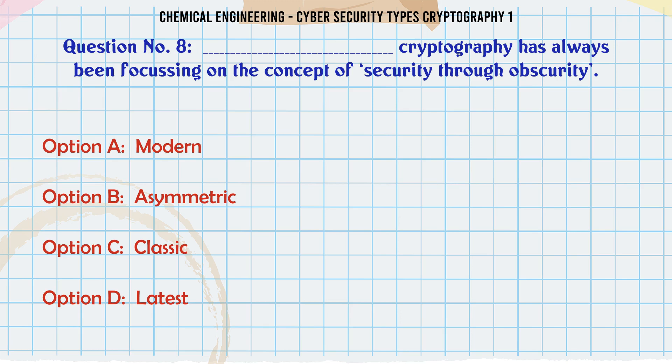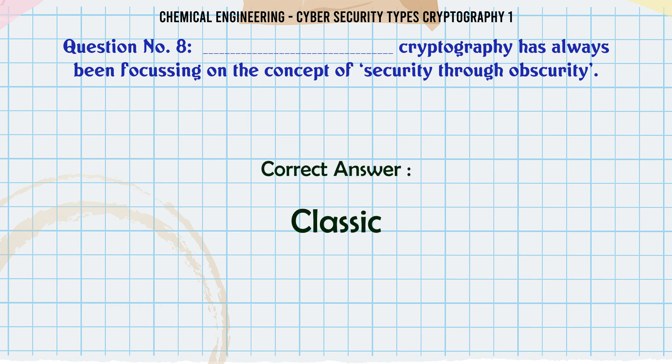Which type of cryptography has always been focusing on the concept of security through obscurity? A) Modern, B) Asymmetric, C) Classic, D) Latest. The correct answer is Classic.